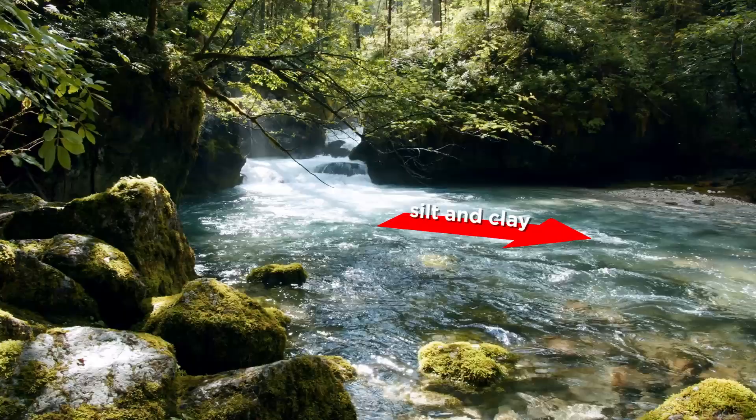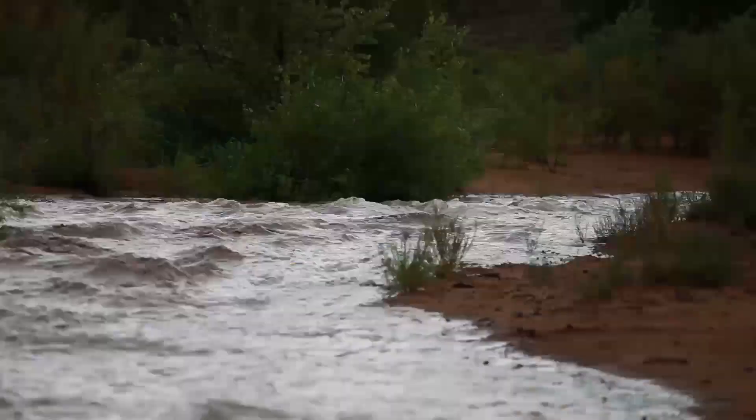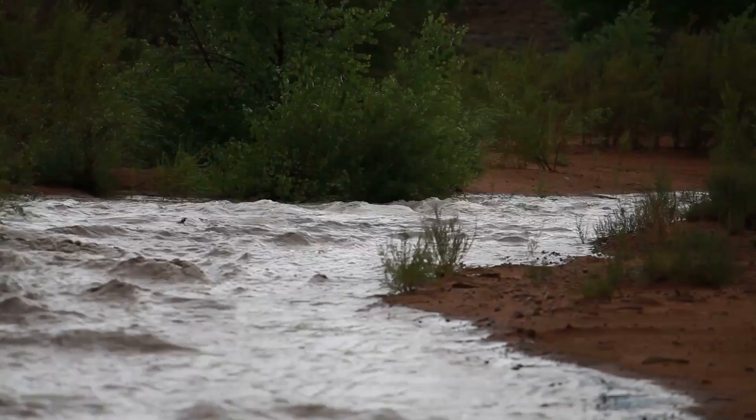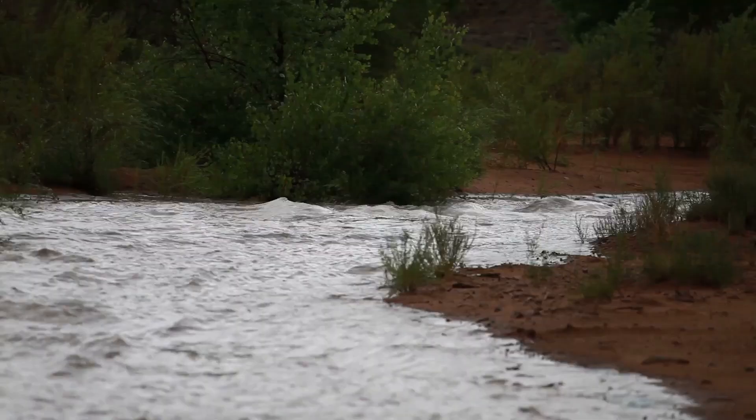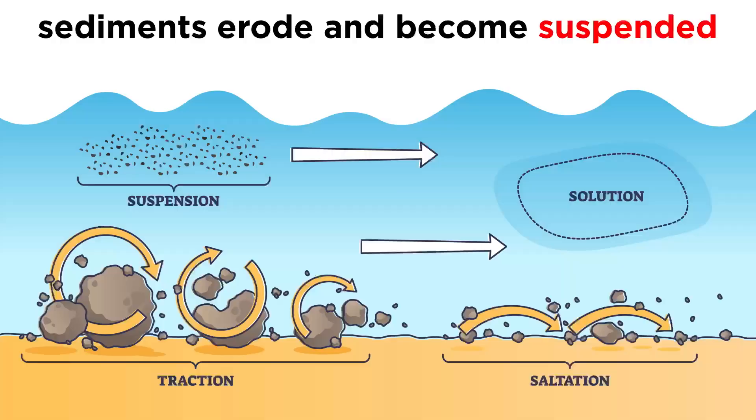Most streams have a sufficiently high velocity that muddy sediments like silt and clay are always suspended and are not deposited in the channel. However, when a stream spills onto its banks, muddy sediment is deposited in the floodplain, or low-lying areas surrounding the stream.